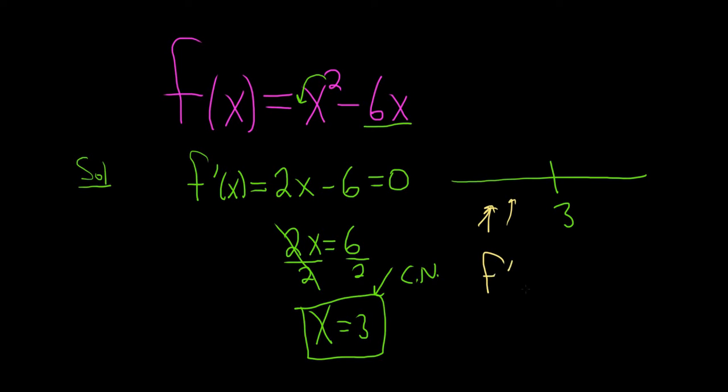So let's plug that in to the derivative. So it will be 2 times 0 minus 6, which is negative 6. So because the derivative is negative, that means that your function is decreasing. If the derivative is positive, your function is increasing.